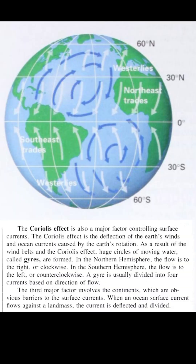Now I'm jumping to a different part of the book that illustrates things differently — it says about the same thing. The Coriolis effect is also a major factor controlling surface currents. The Coriolis effect is the deflection of the earth's winds and ocean currents caused by the earth's rotation.